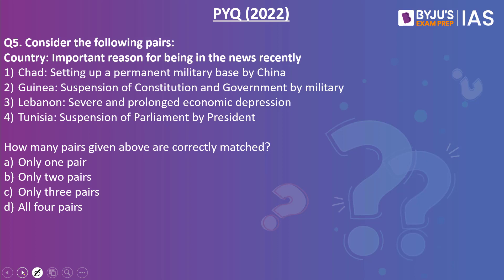Next question — consider the following pairs of country and important reason for being in the news: Chad — setting up a permanent military base by China; Guinea — suspension of constitution and government by military; Lebanon — severe and prolonged economic depression; Tunisia — suspension of parliament by president. How many pairs are correctly matched? The answer is only three pairs. This is a previous year question from 2022. The first pair is incorrectly matched — it is not Chad but Equatorial Guinea where China set up a permanent military base. The other three statements are correct, so the answer is C.